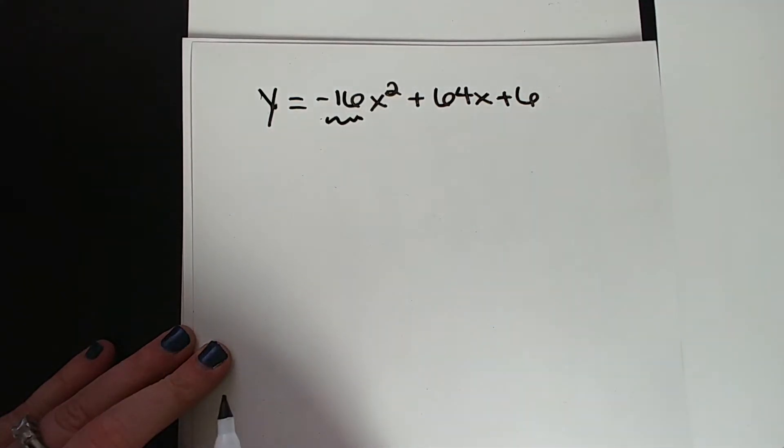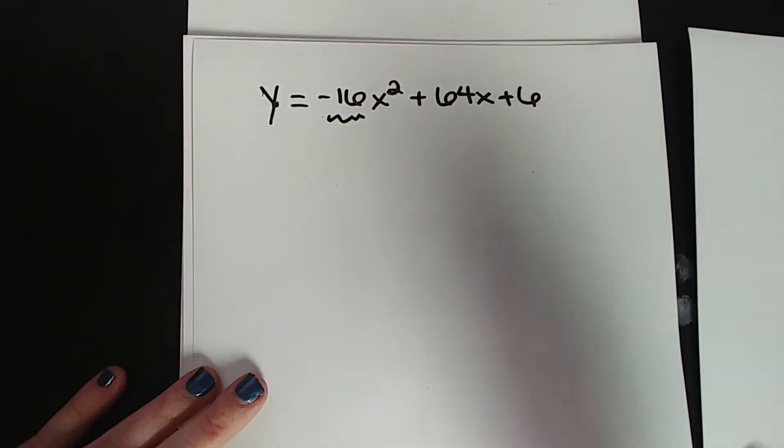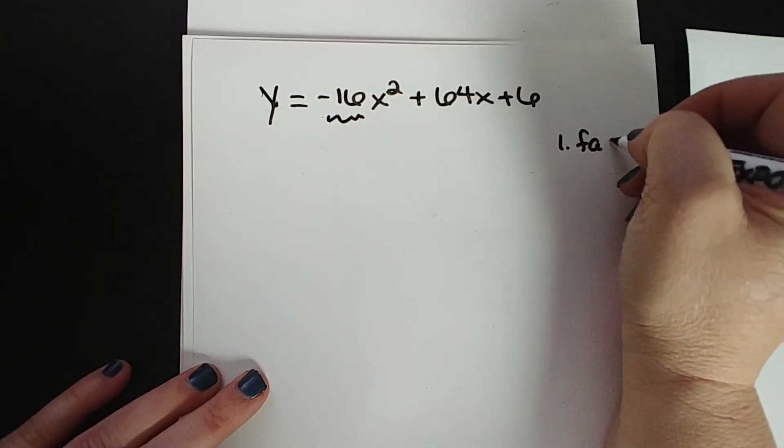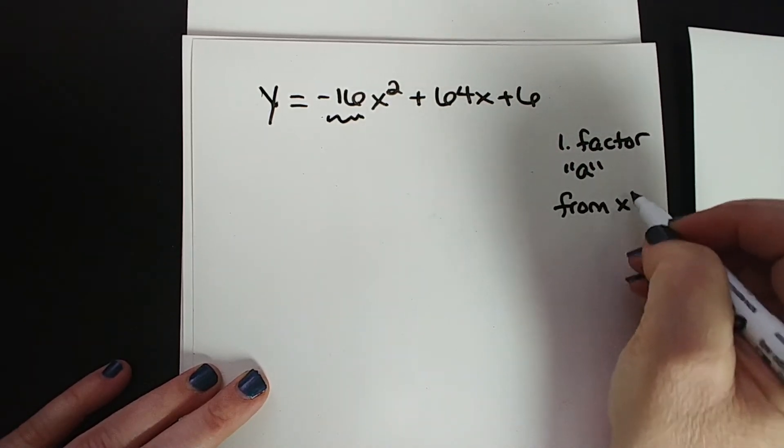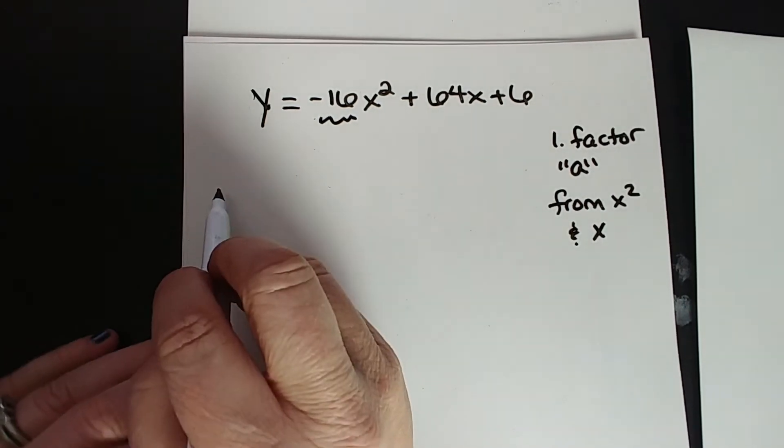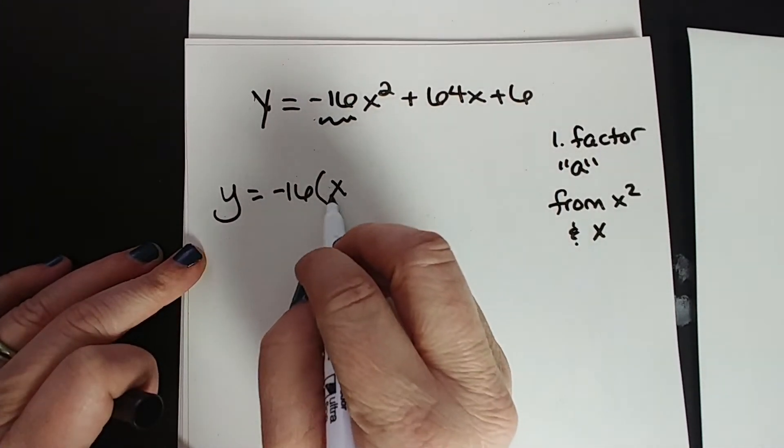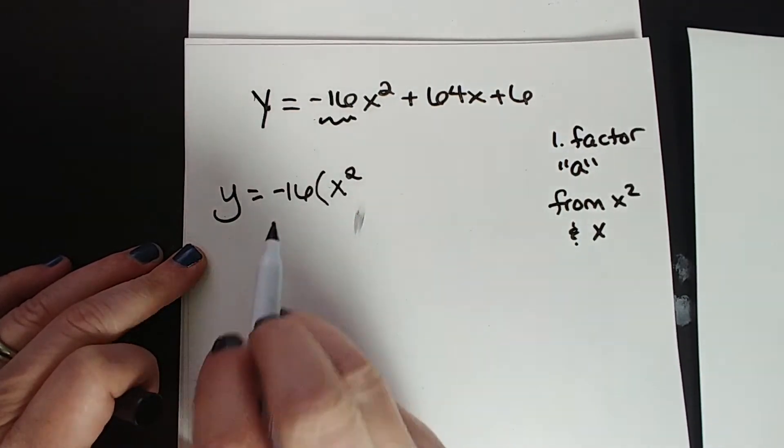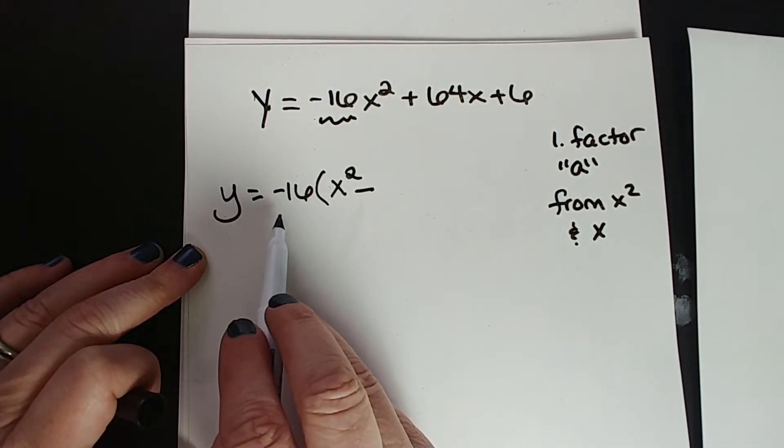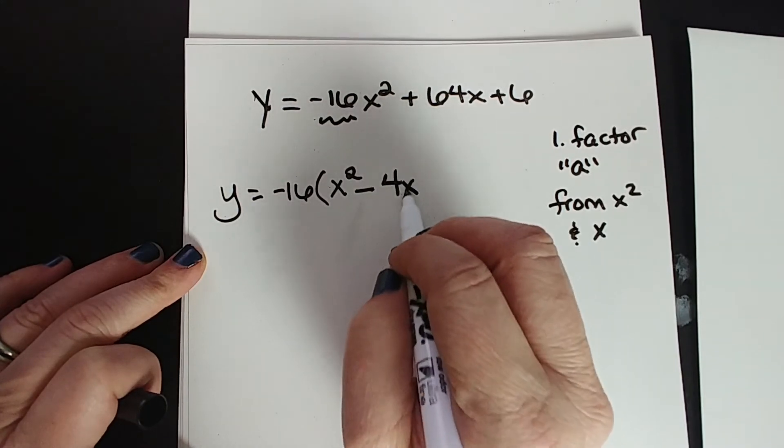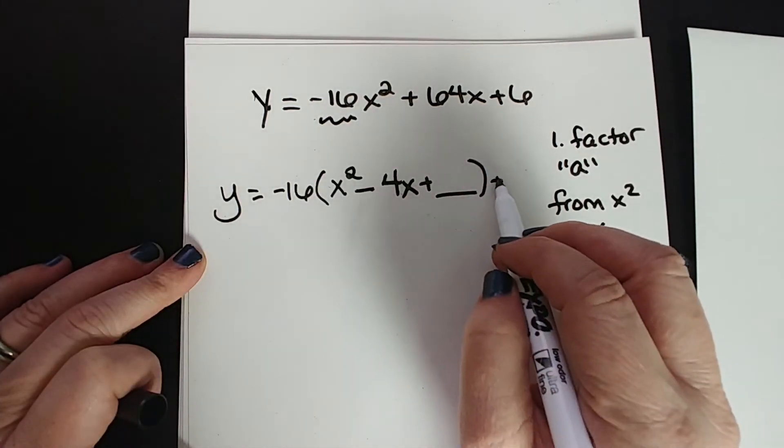Completing the square. You can't have anything in front of that x squared term. So our first step is we're going to factor out the number that's in front of the x squared from the x squared and x term alone. So we have y equals. Negative 16 comes out. We have x squared left. We're going to take out that positive 64 divided by negative 16, which is negative 4x. And then we're going to leave a little space for that something to be named later when we complete the square. But don't forget, don't lose your 6.